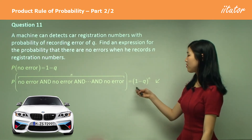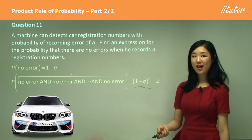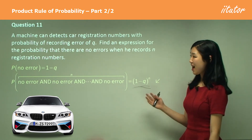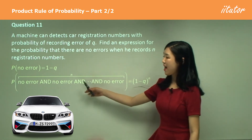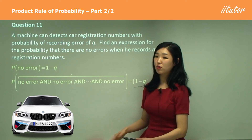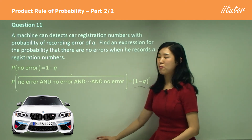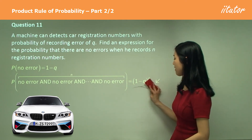So (1 − Q)^n is your answer. Because it's 'and,' we're just multiplying — that's why we get a power of n.